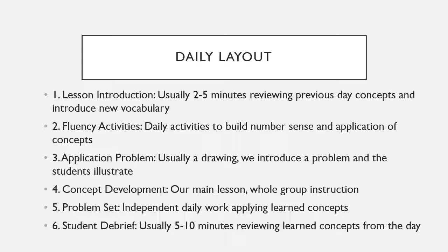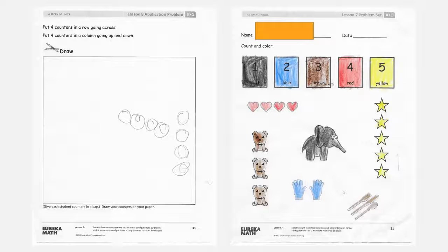I'm going to show you the application problem and the problem set now. In this case the directions say put four counters in a row going across, and then put four counters in a column going up and down. So a row says 'no' and a column says 'yes.' I had them make a row first, and this is a beautiful example of this particular lesson — then a column, and they made sure they made a column.